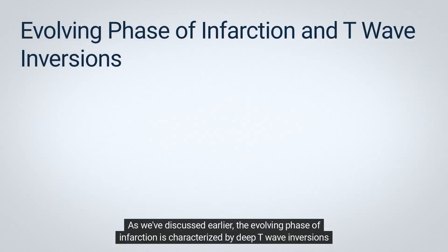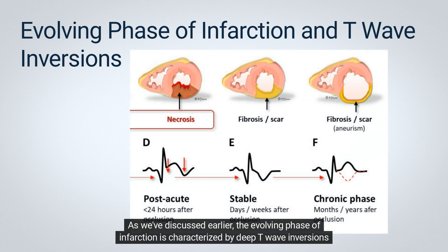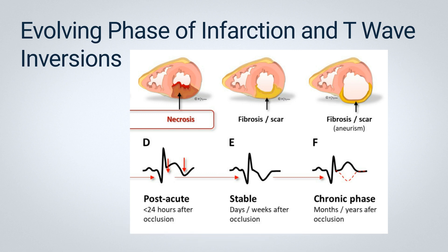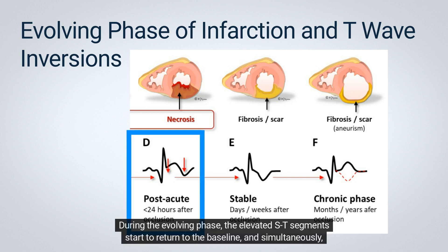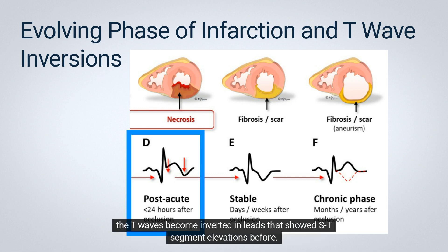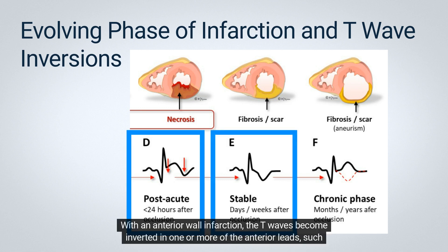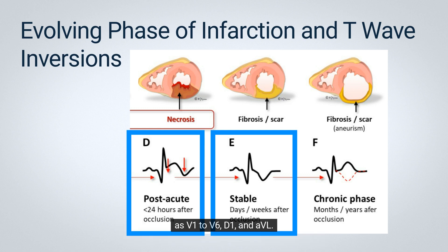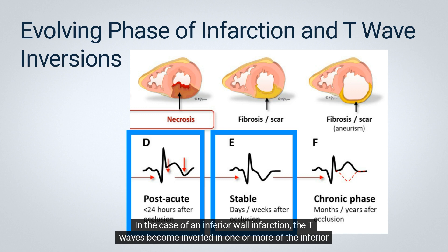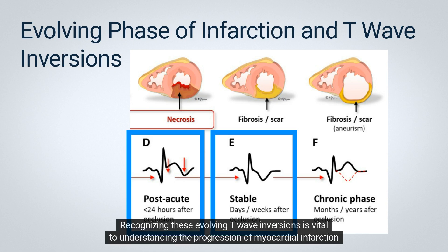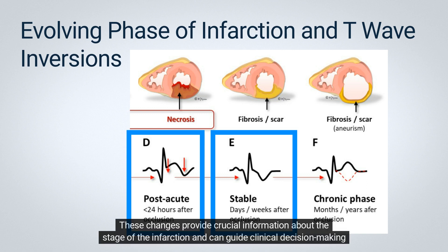The evolving phase of infarction is characterized by deep T-wave inversions in the leads that previously displayed ST-segment elevations, usually occurring hours or even a few days after the acute phase. During the evolving phase, the elevated ST-segments start to return to baseline, and simultaneously the T-waves become inverted in leads that showed ST-segment elevations before. With an anterior wall infarction, the T-waves become inverted in one or more of the anterior leads such as V1, V2 through V6, D1, and AVL. In the case of an inferior wall infarction, the T-waves become inverted in one or more of the inferior leads like D2, D3, and AVF. Recognizing these evolving T-wave inversions is vital to understanding the progression of myocardial infarction and making accurate diagnoses.